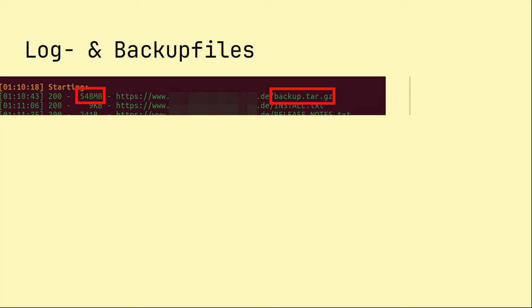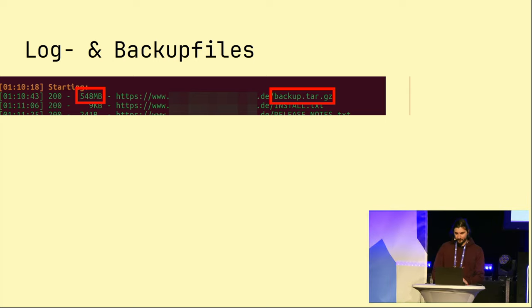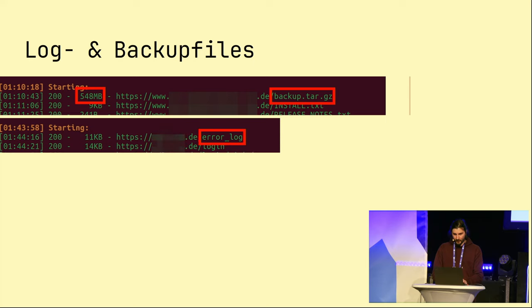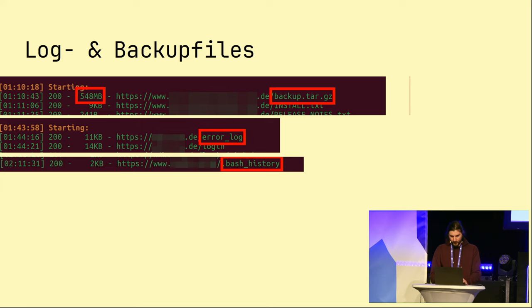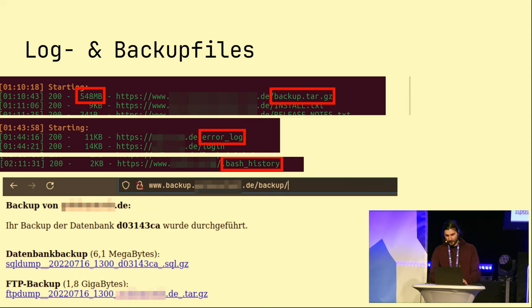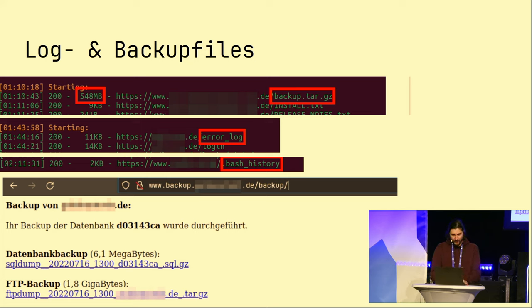During the research it was not unusual to come across publicly available backups like this, containing the entire file system and the database. There were also logs containing sensitive information — for example error logs, or the history of the command line user. But it can be much worse: you only had to know a link to generate an SQL dump of the database in the file system live. And remind yourself — this is KRITIS, meaning critical infrastructure.